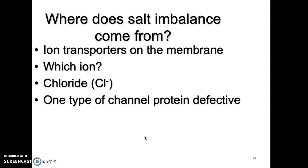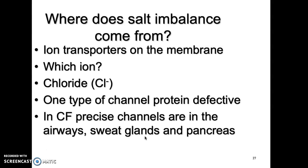There's one type of channel protein that's defective — unable to transport that chlorine outside of the cell and into a lumen, the inner portion of some sort of tube. If you're thinking of your trachea, the lumen is the inside where the air is moving. In cystic fibrosis, these channels are in the airways, in the sweat glands, and in the pancreas. So this is going to affect breathing, digestion, and water balance.